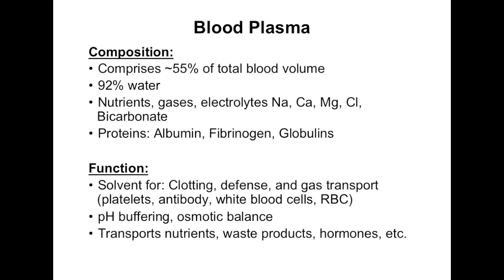This section talks about the composition of blood plasma, which you'll cover more in lecture. It includes important ions and proteins: albumin, fibrinogen, and globulin proteins — all found in the blood plasma.